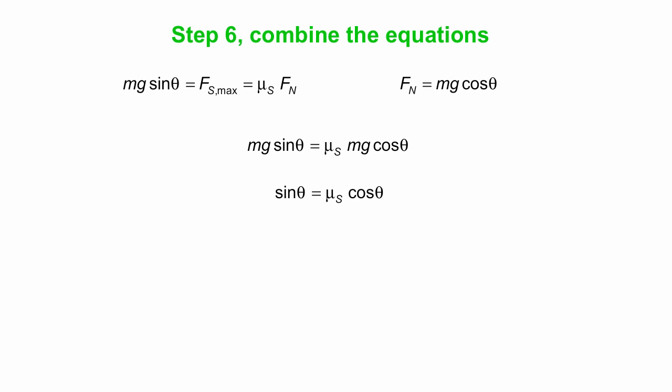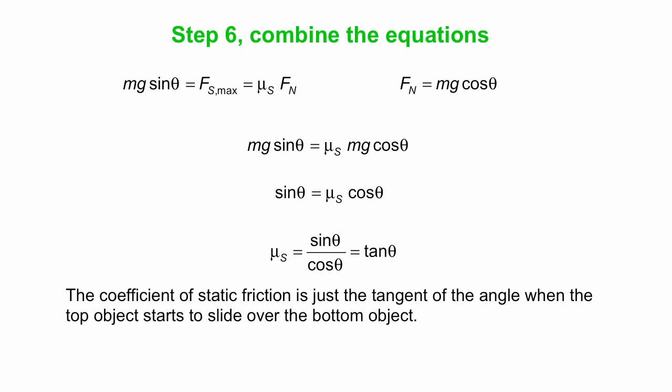So what we get is a nice simple equation, sine theta is mu s cos theta, so we can rearrange that. Mu s is sine over cosine, well that's just tangent. That's neat. Mu s is tan theta. That's how you can measure the value of the coefficient of static friction. It's simply the tangent of the angle when the top object starts to slide over the bottom object.